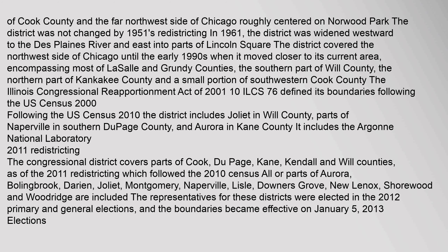2011 Redistricting: The congressional district covers parts of Cook, DuPage, Kane, Kendall, and Will counties as of the 2011 redistricting, which followed the 2010 census. All or parts of Aurora, Bolingbrook, Darien, Joliet, Montgomery, Naperville, Lisle, Downers Grove, New Lenox, Shorewood, and Woodridge are included. The representatives for these districts were elected in the 2012 primary and general elections, and the boundaries became effective on January 5, 2013.